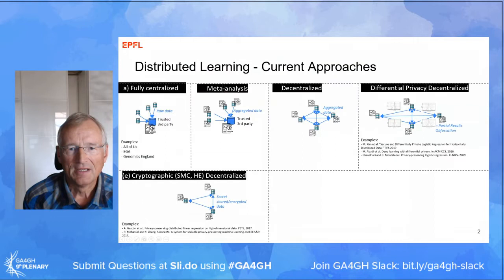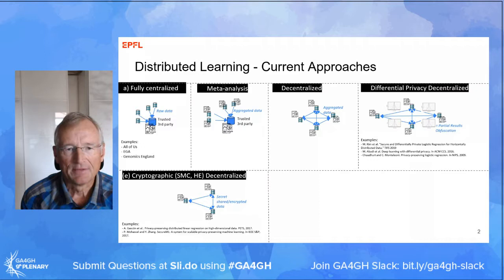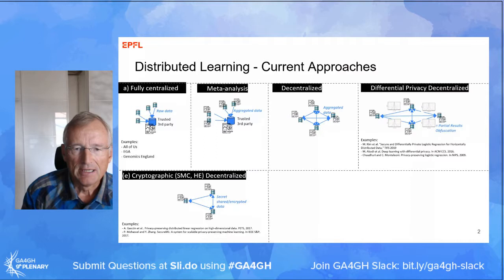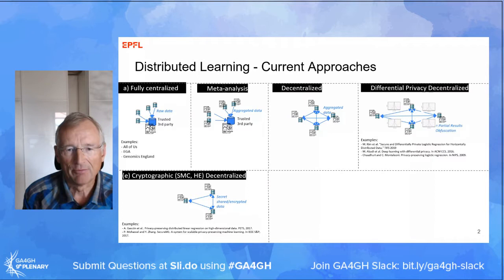There exist a number of solutions for distributed learning. It can be fully centralized, or meta-analysis and decentralized, or differential privacy decentralized, or cryptography-based decentralized. We have really looked into the details and features of all these solutions, and they come with drawbacks that brought us back to the blackboard to try to find a better solution.